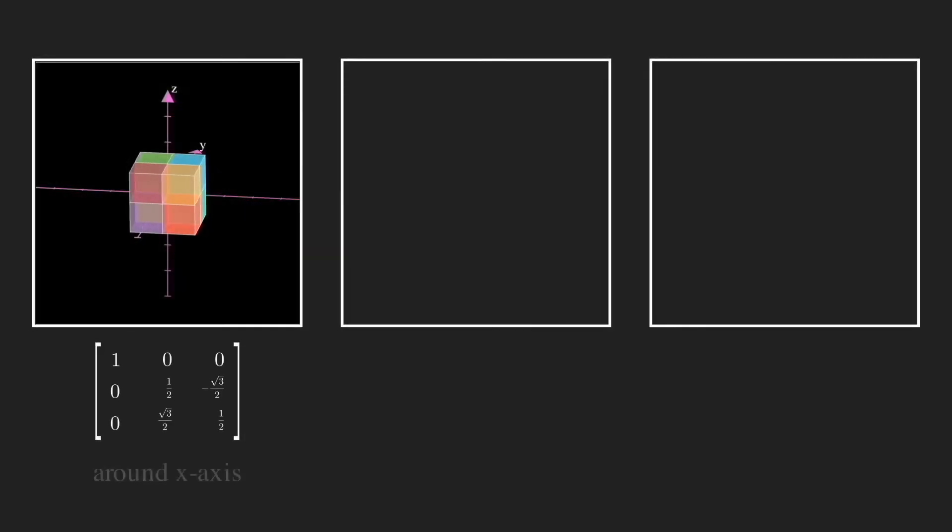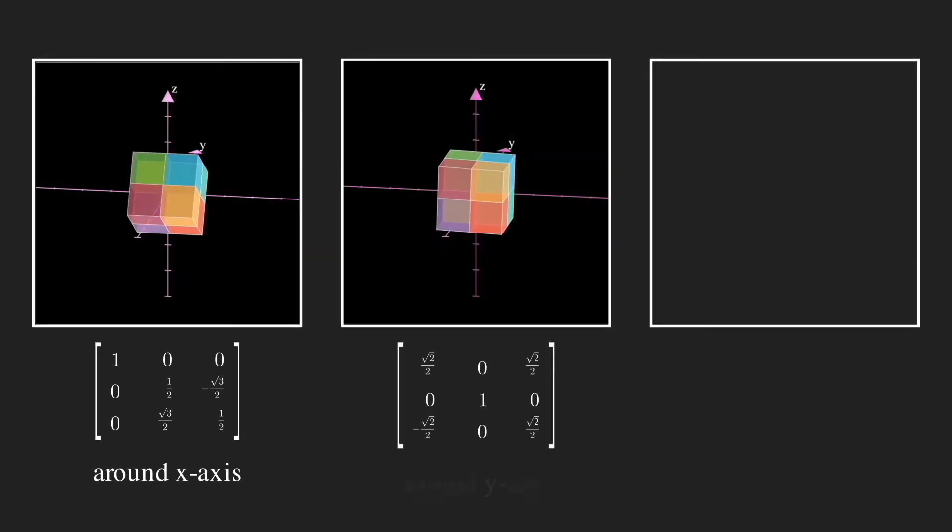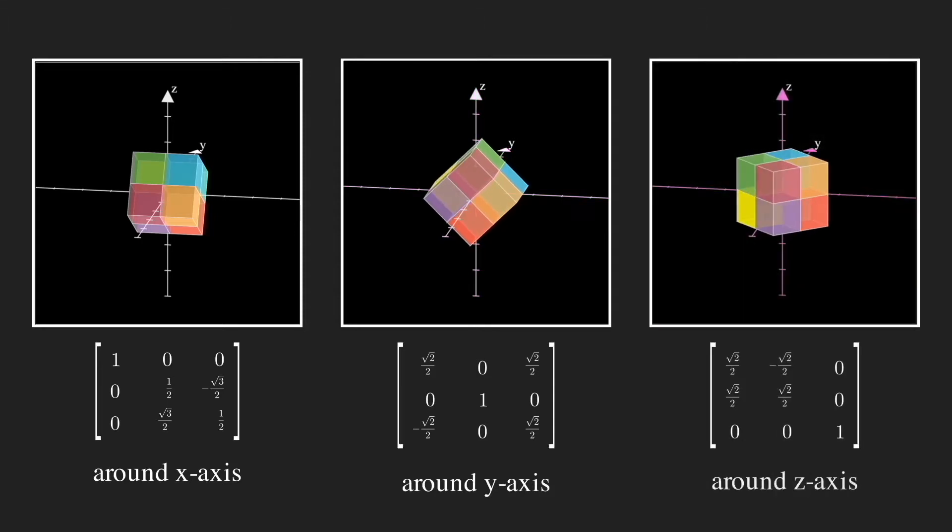Inductively, a 3 by 3 orthogonal matrix produces a rotation in three dimension. And you can also rotate around the z-axis now.